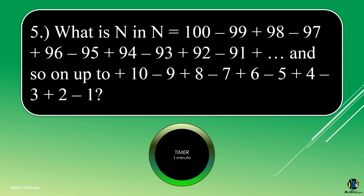What is n, where n equals 100 minus 99 plus 98 minus 97 plus 96 minus 95 plus 94 minus 93 plus 92 minus 91, and so on up to plus 10 minus 9 plus 8 minus 7 plus 6 minus 5 plus 4 minus 3 plus 2 minus 1?